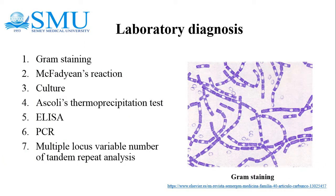Laboratory diagnosis of anthrax — specimen collection: specimens should be collected before starting antibiotic treatment. Useful specimens include pus or swab from malignant pustule, sputum in pulmonary anthrax, blood in septicemia, cerebrospinal fluid in hemorrhagic meningitis, gastric aspirate, feces in intestinal anthrax, and ear lobes from dead animals.